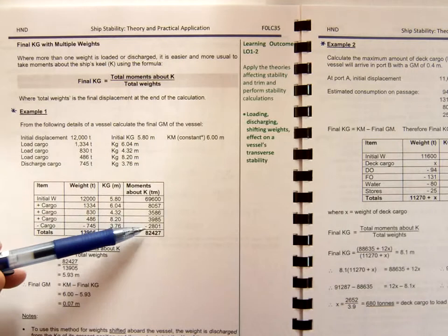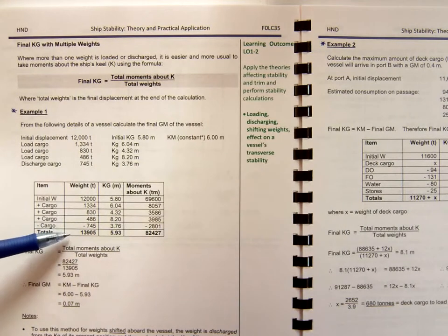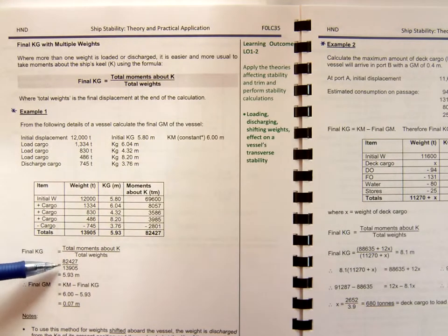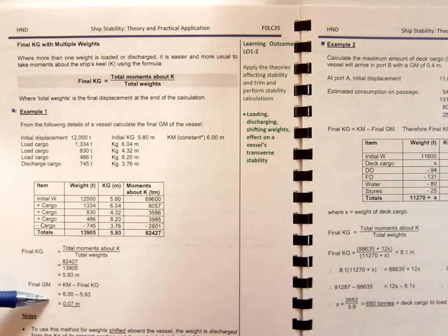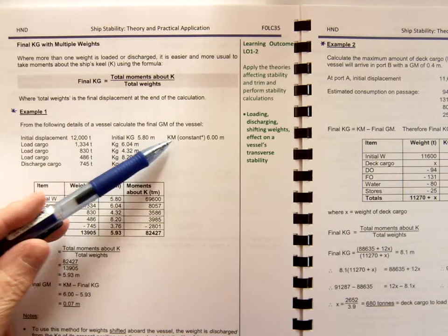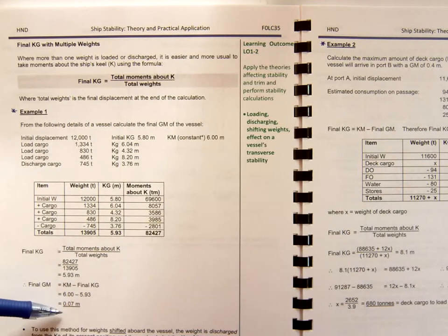The final KG is always the total moments divided by the total weight. Here we have the calculation. The final KG was 5.93. Therefore the final GM is 6 metres minus 5.93, which is 0.07 of a metre.